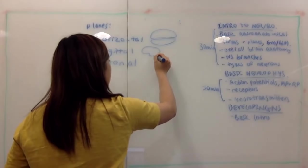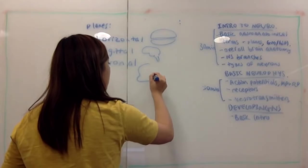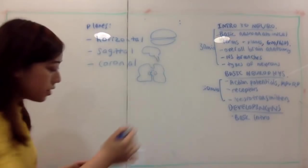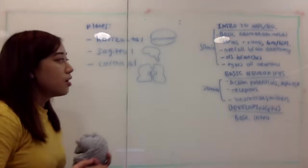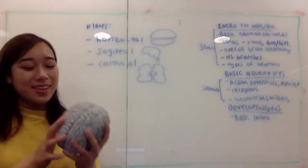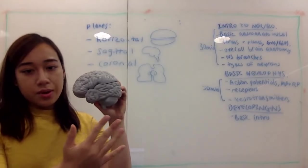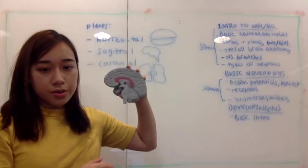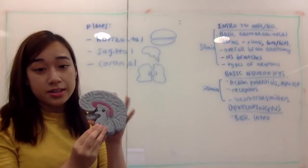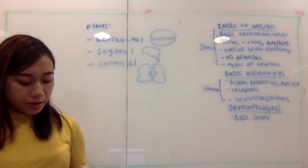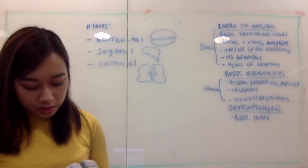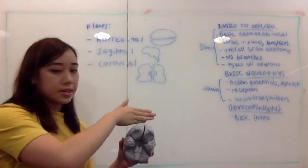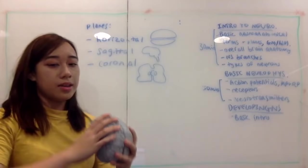The sagittal plane means cutting directly this way along your head — this in particular is the mid-sagittal plane because it's directly down the middle of the brain. Coronal is cutting down like this from the front of your head, forming forward slices. Horizontal — also known as transverse — is cutting across horizontally, giving the superior view.